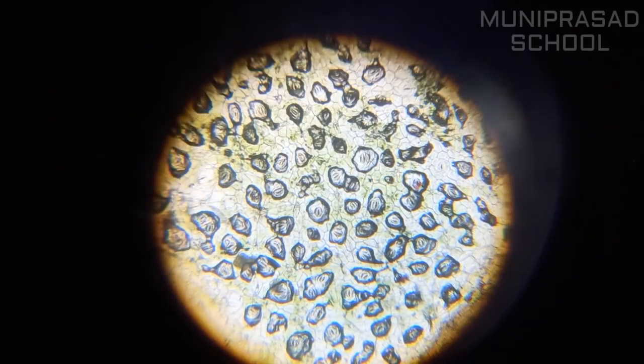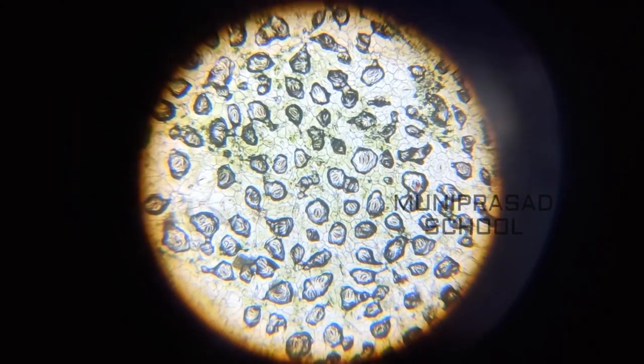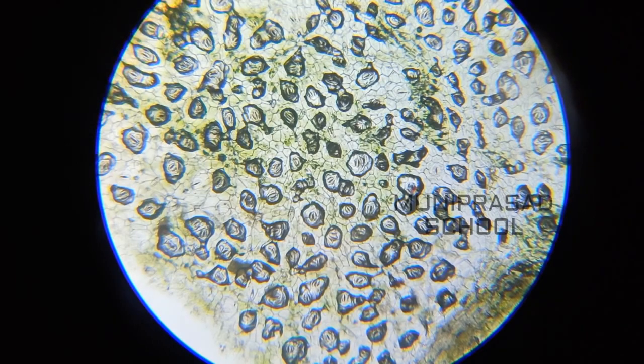We see a number of small pore-like structures in the epidermis of the leaf. These are called stomata.